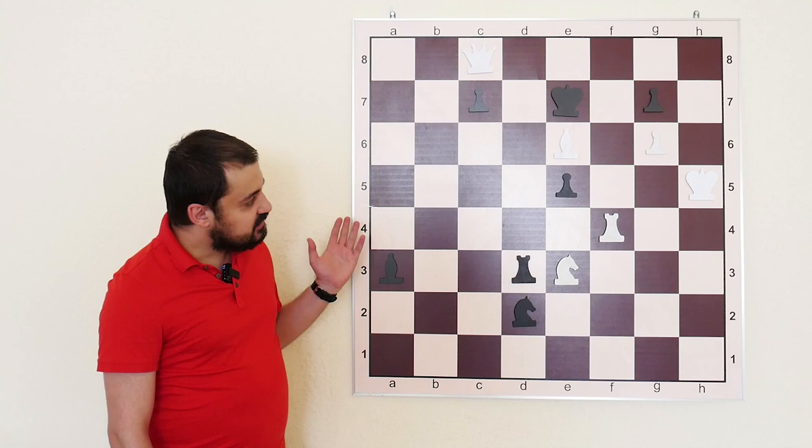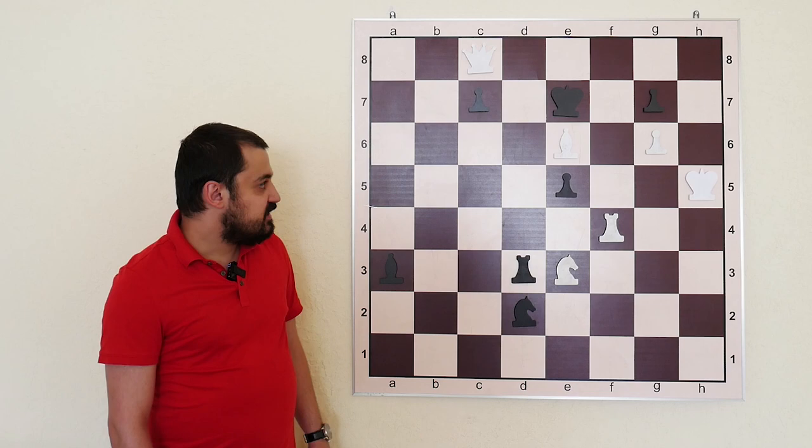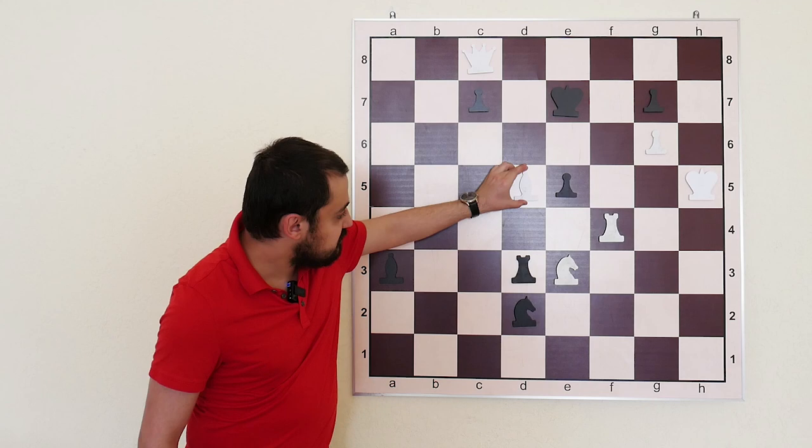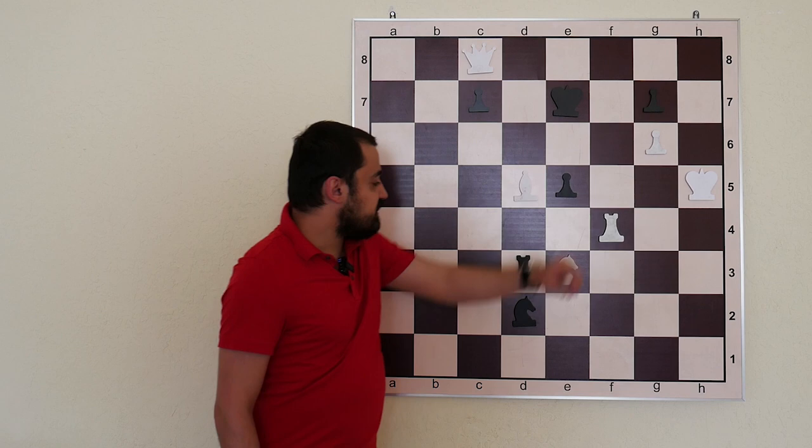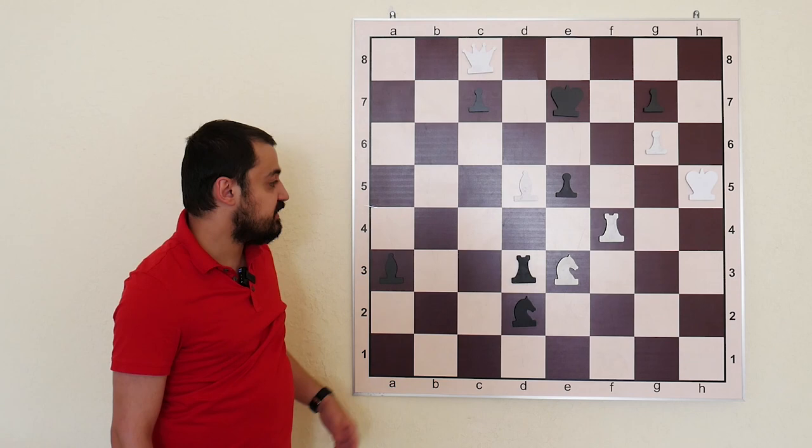Here you can see we are Queen up but we have to mate in three. In this position we are starting with Bishop d5. Now we want to give check from f7, King d6, and then Queen c7 mate if Black plays any other move.